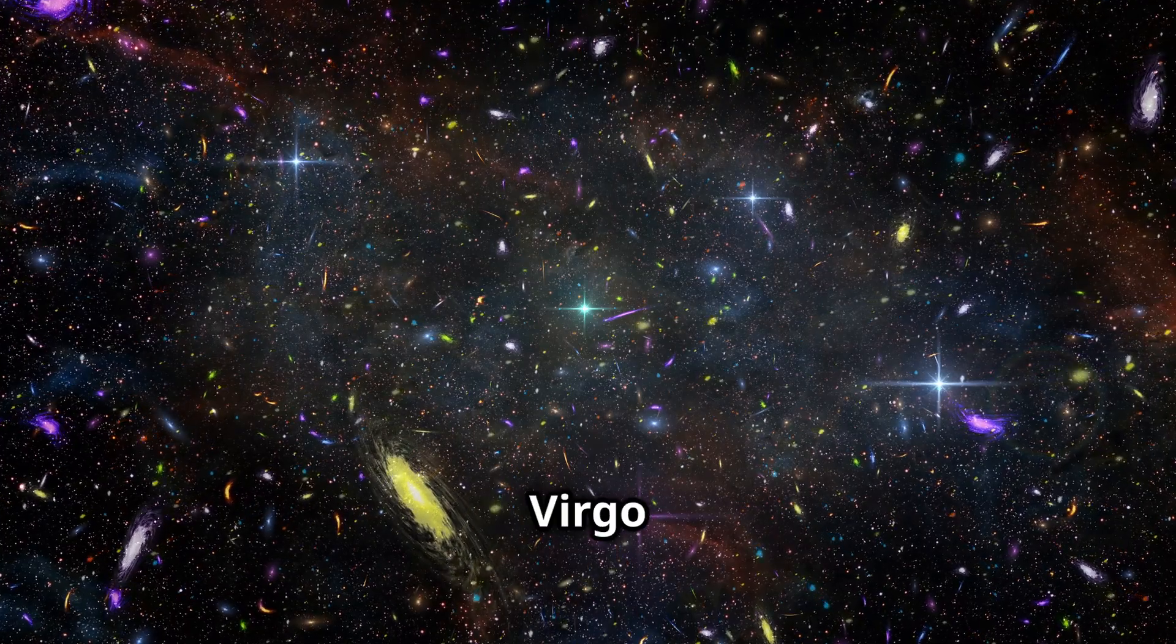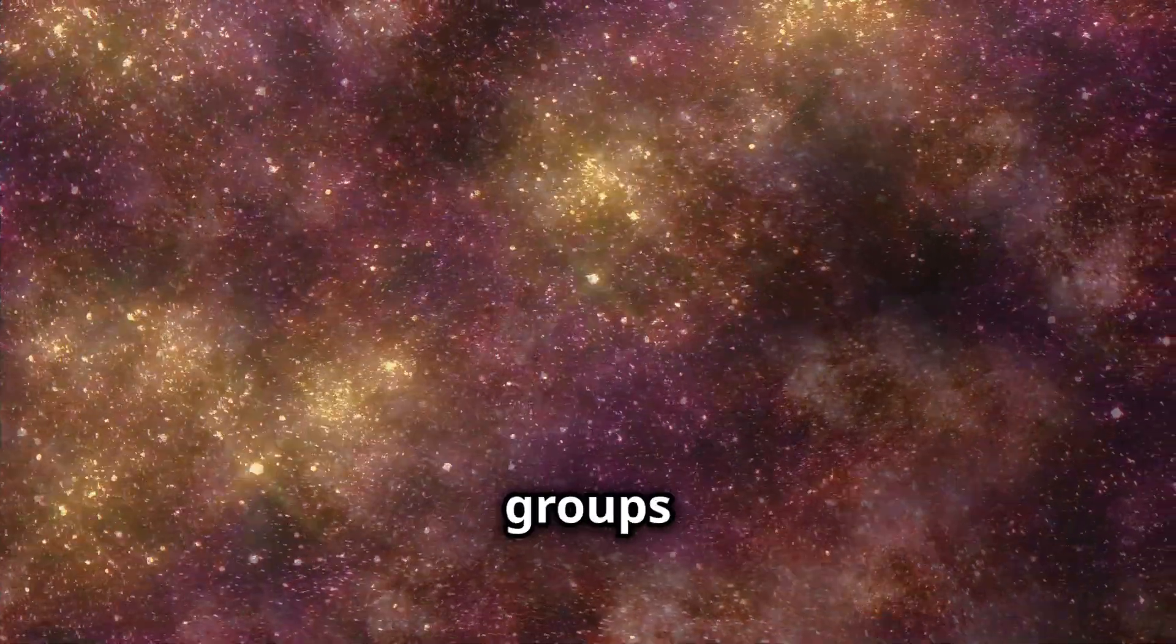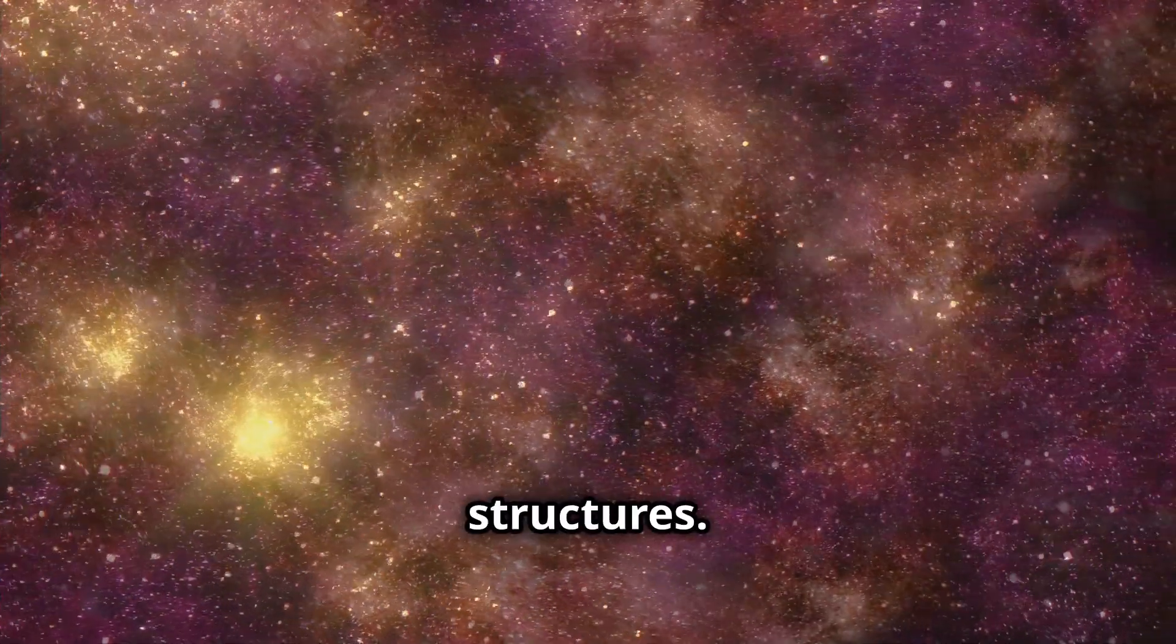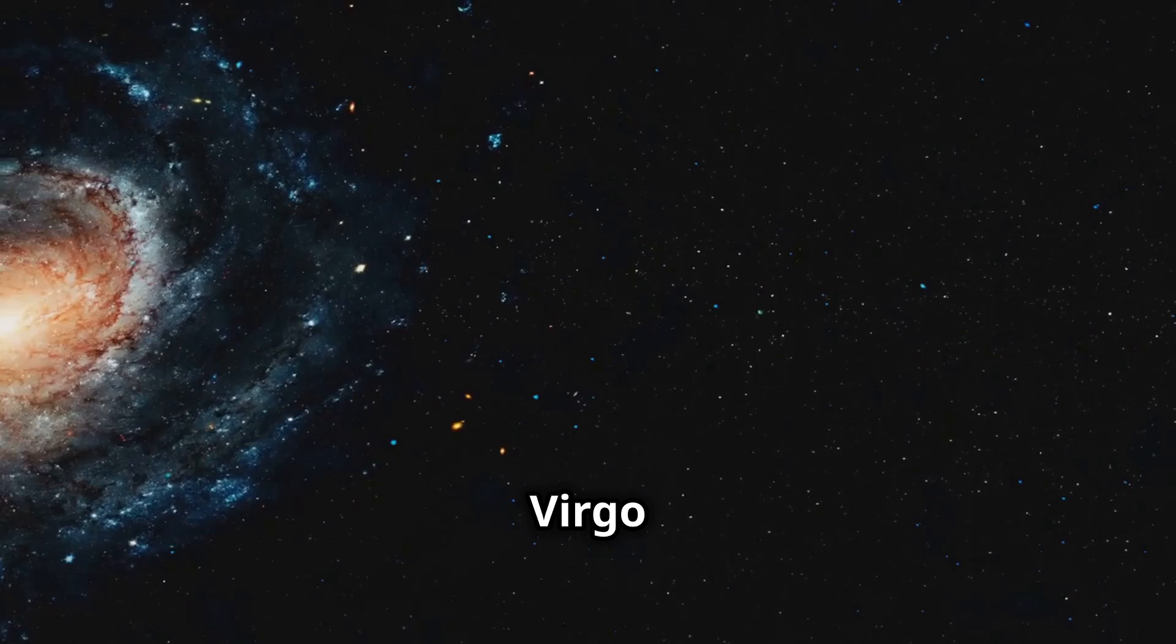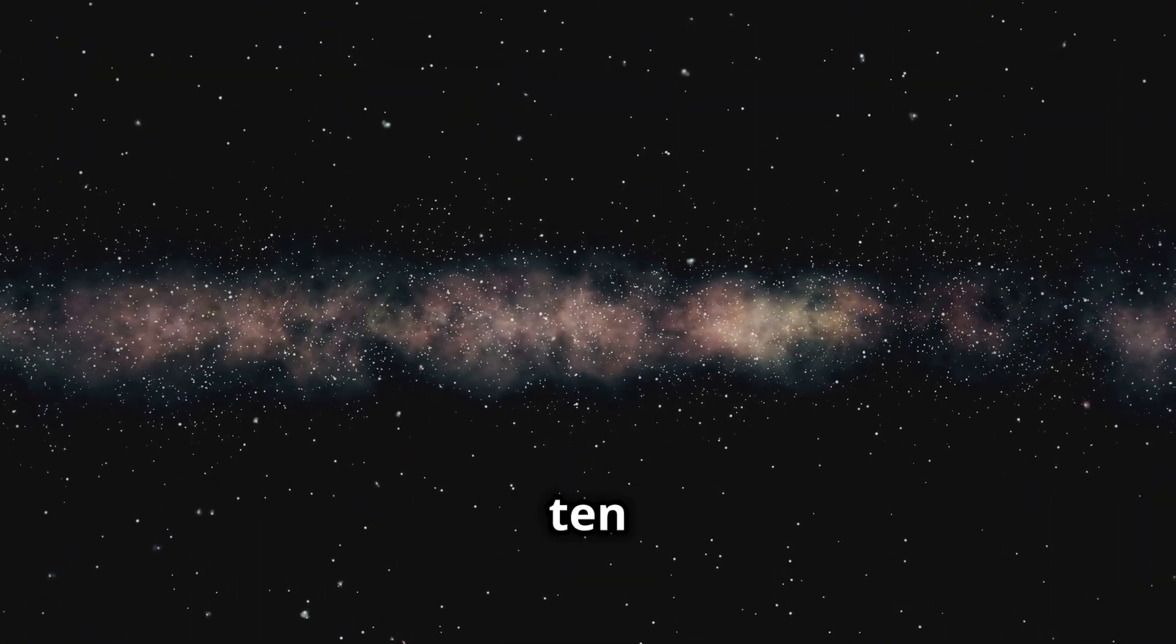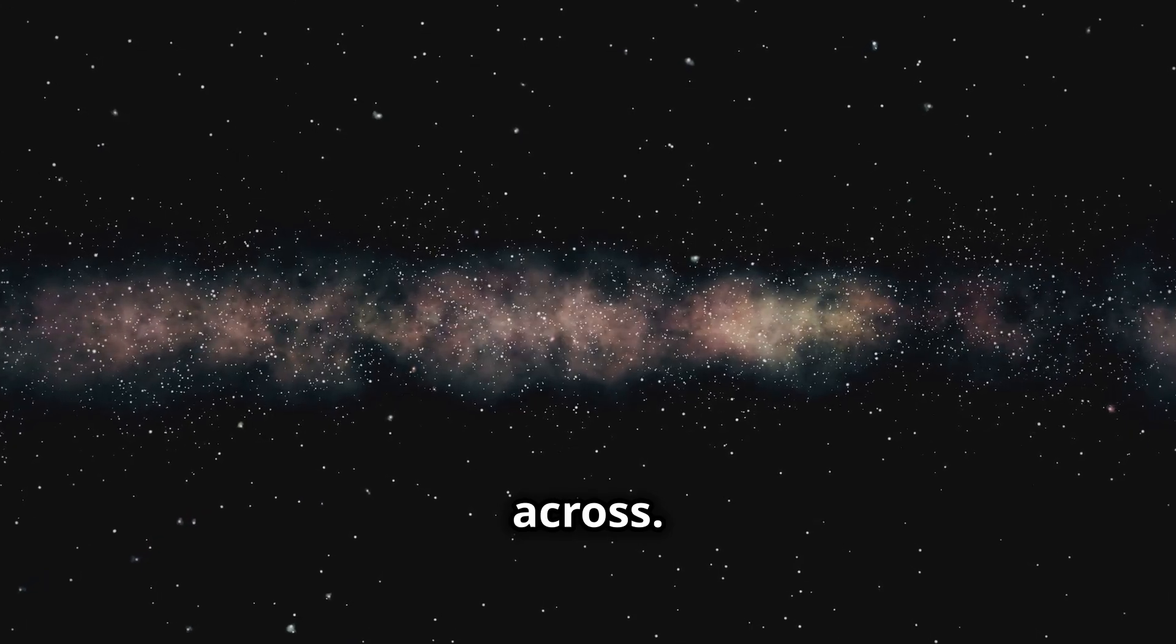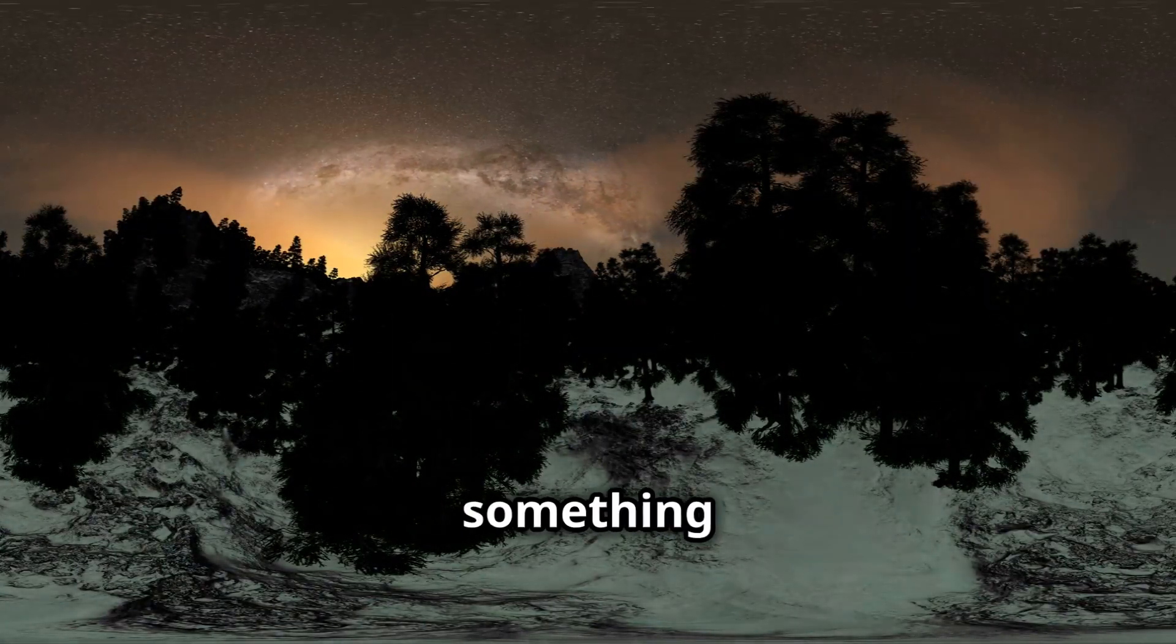Chapter 6: The Virgo Supercluster, a cosmic metropolis. But even galaxy groups are dwarfed by even larger structures. The Local Group is just one of hundreds of galaxy groups and clusters that make up the Virgo Supercluster, a massive cosmic metropolis spanning 110 million light-years across. It's a humbling reminder that even on a galactic scale we are part of something much grander.